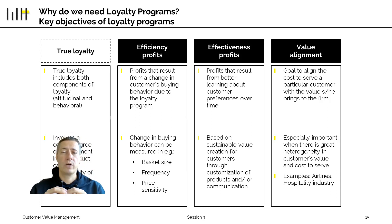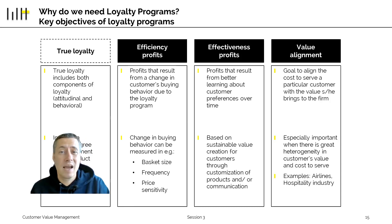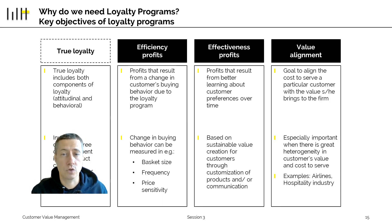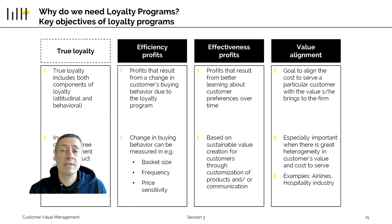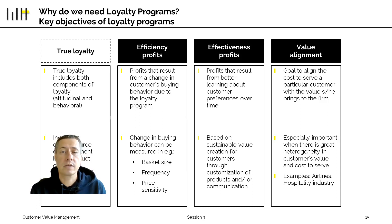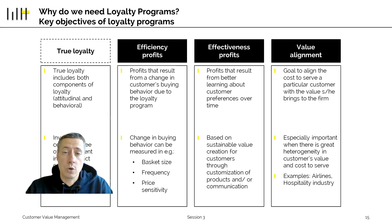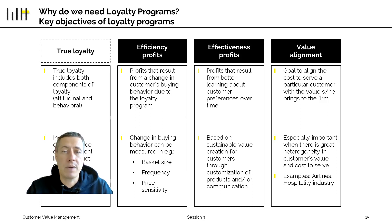The last benefit that loyalty programs bring is value alignment — they tell front-facing customer service employees how valuable a customer is, which is especially important when there are large differences in customer value and cost. Think of an airline: every airline with a loyalty program usually has different levels associated with different cards that have different names or colors. When a customer shows their card at check-in, the service employee knows how valuable the customer is and can adapt how they treat that customer, which is consistent with the CRM definition from the first session.